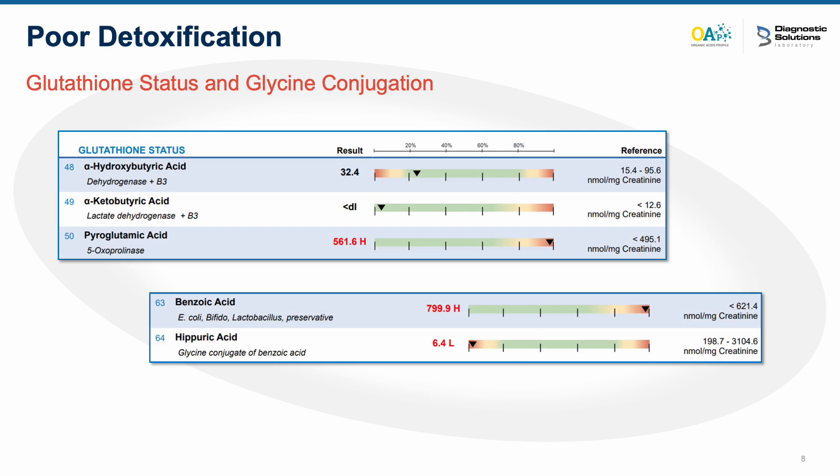Furthermore, the OAP can tell you if your patients are detoxing appropriately. Glutathione is the body's master antioxidant. By measuring three different metabolites, we can determine if someone is depleted in glutathione or burning through it rapidly. The test also gives insight into glycine conjugation by demonstrating the conversion of benzoic acid to hippuric acid.